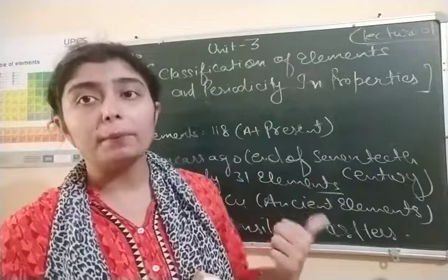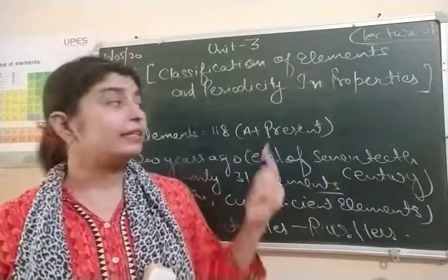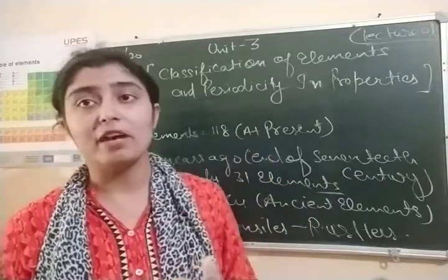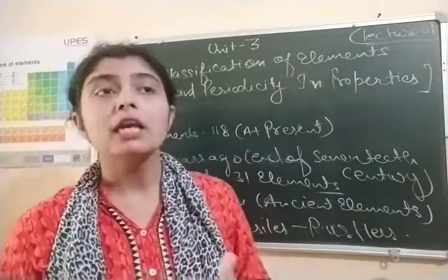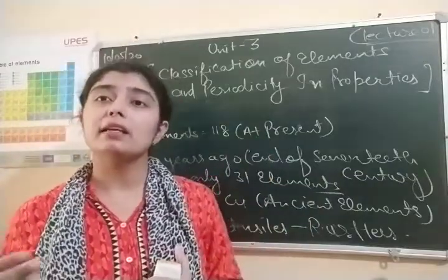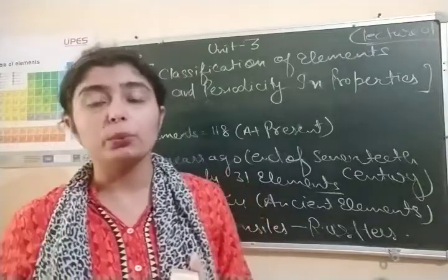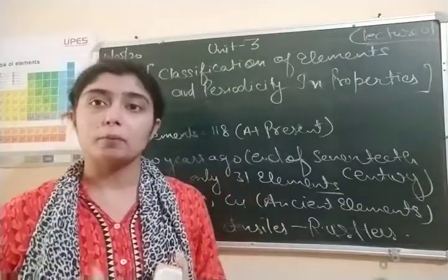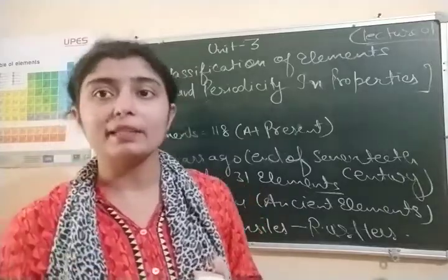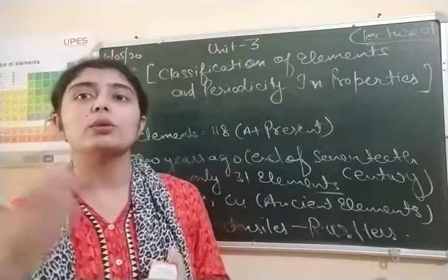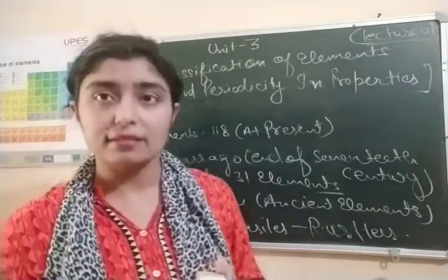So, at present there are 118 elements in our environment. Gradually, over time, their discovery happened. Why were they discovered? How did we come to know about their properties? All of this we have to discuss within this unit.